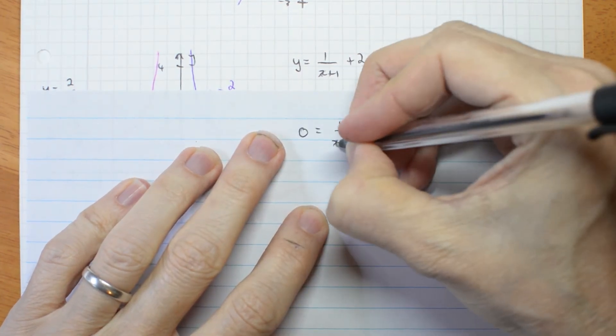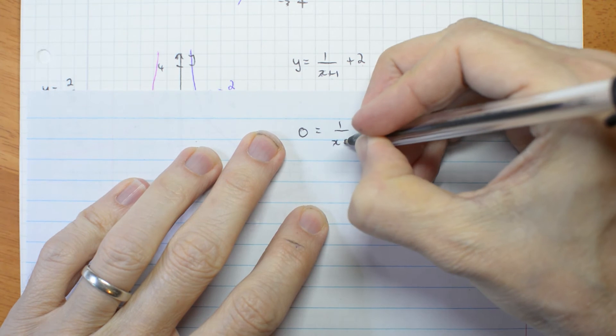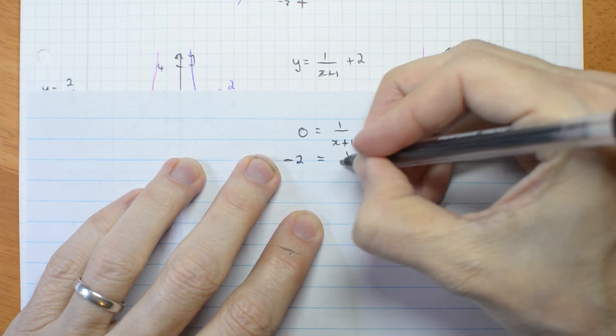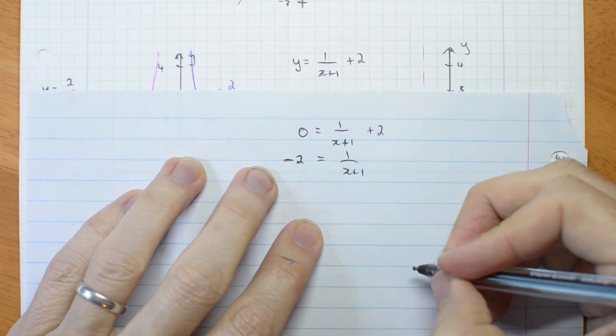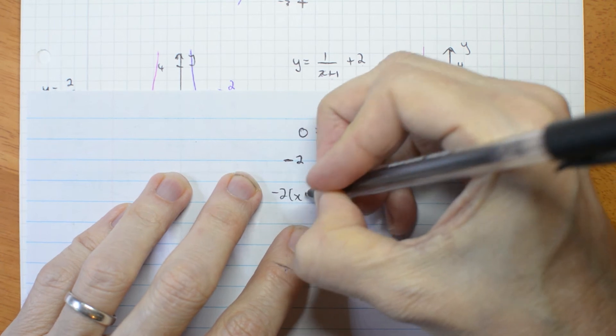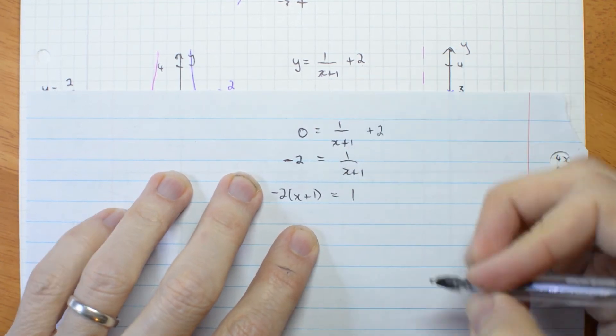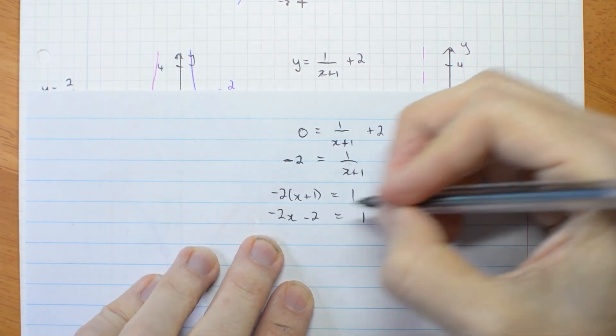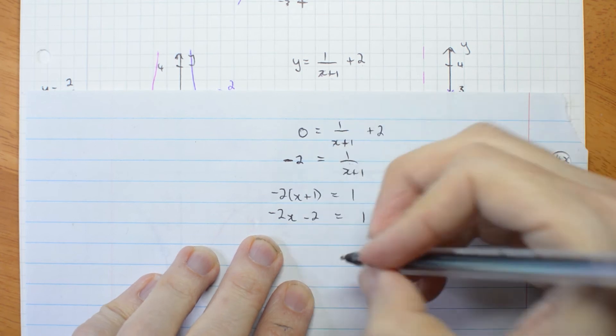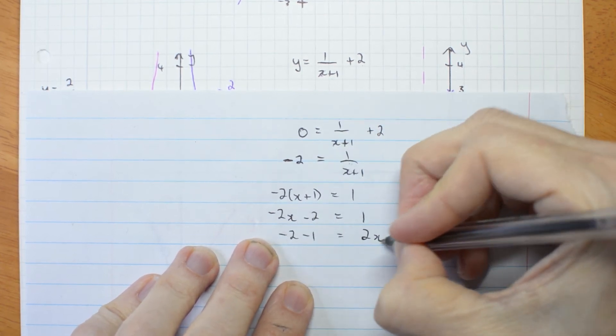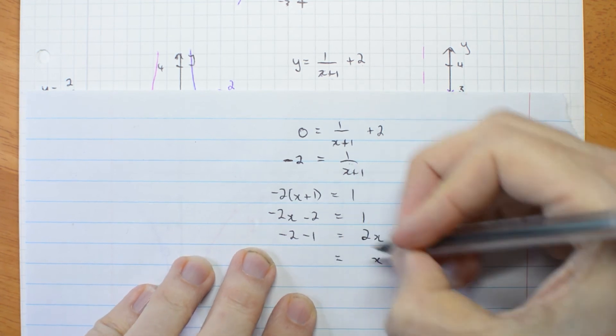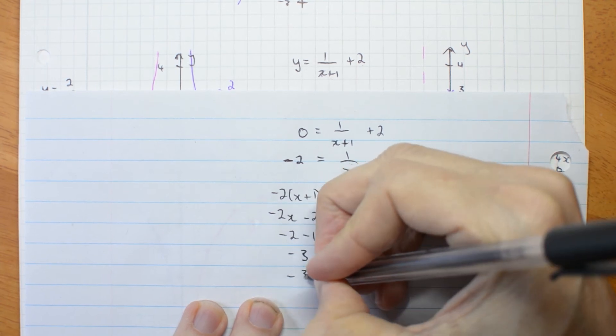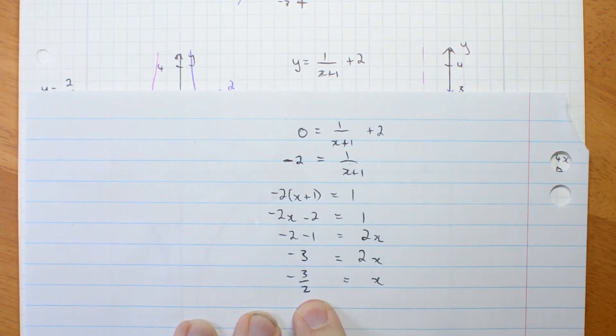0 equals 1 over x plus 1 plus 2. Put the 2 on the other side. Negative 2 equals 1 over x plus 1. Cross multiply. Negative 2 x plus 1 equals 1. Expand the brackets. Put the x on the other side and the 1 on this side. Negative 2 take 1 equals 2x. Sorry, let me do one more step. Negative 3. x is negative 3 on 2. Negative 1 and a half.